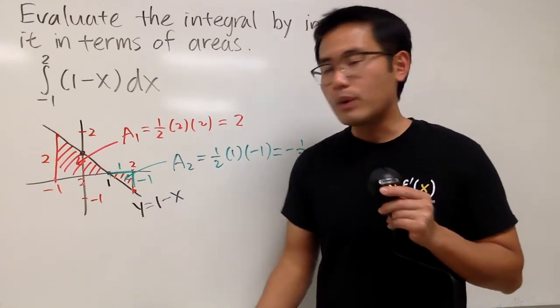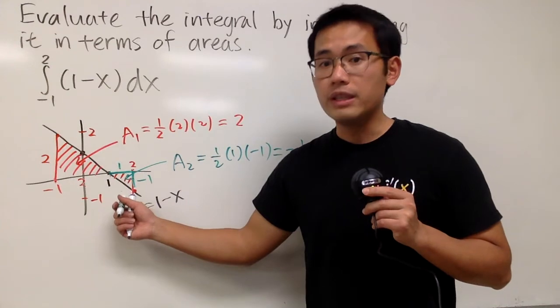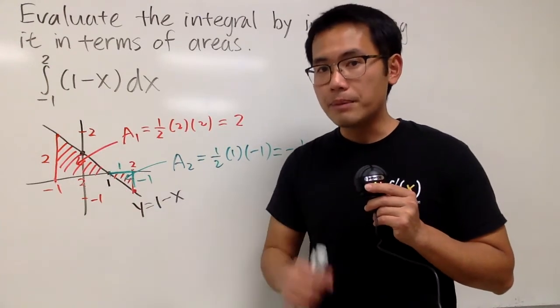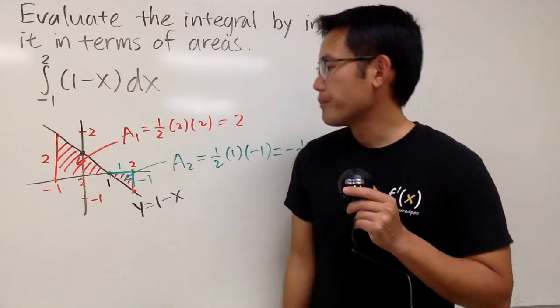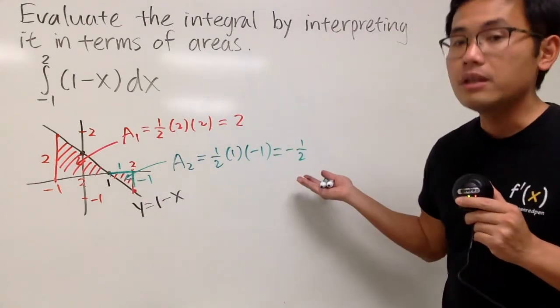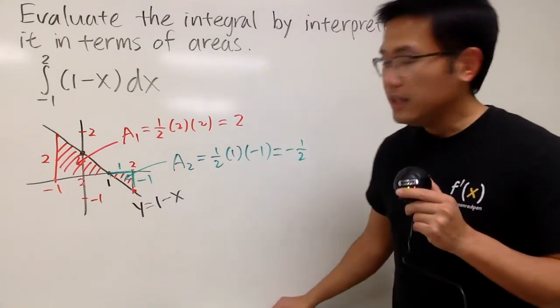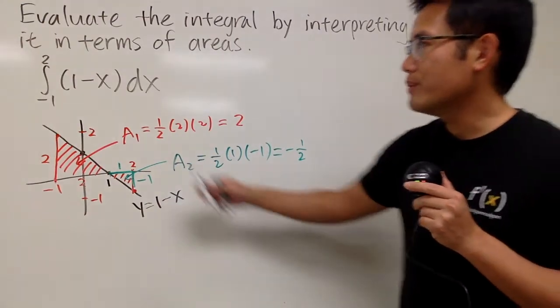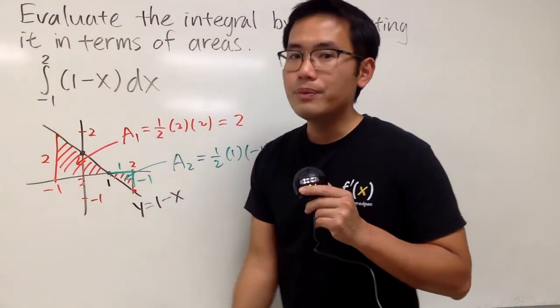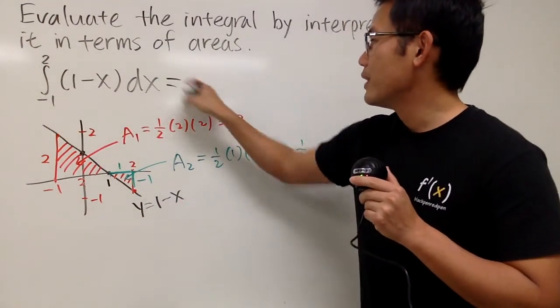And again, if you are talking about what's the area of this triangle, technically it's positive 1 half. But if you're talking about what's the value of the integral from here to here, the answer will be negative 1 half. And if you're talking about the integral value from negative 1 to 2, what we have to do is, first of all, put down 2.